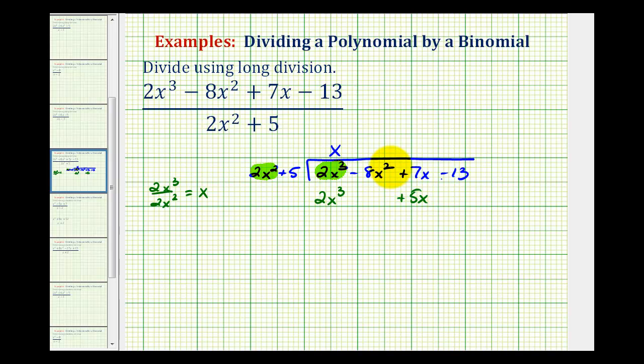But when performing long division, we need to subtract this result. But instead of subtracting this binomial, we're going to add the opposite. Meaning we can change this to addition as long as we change the sign of both of these terms.